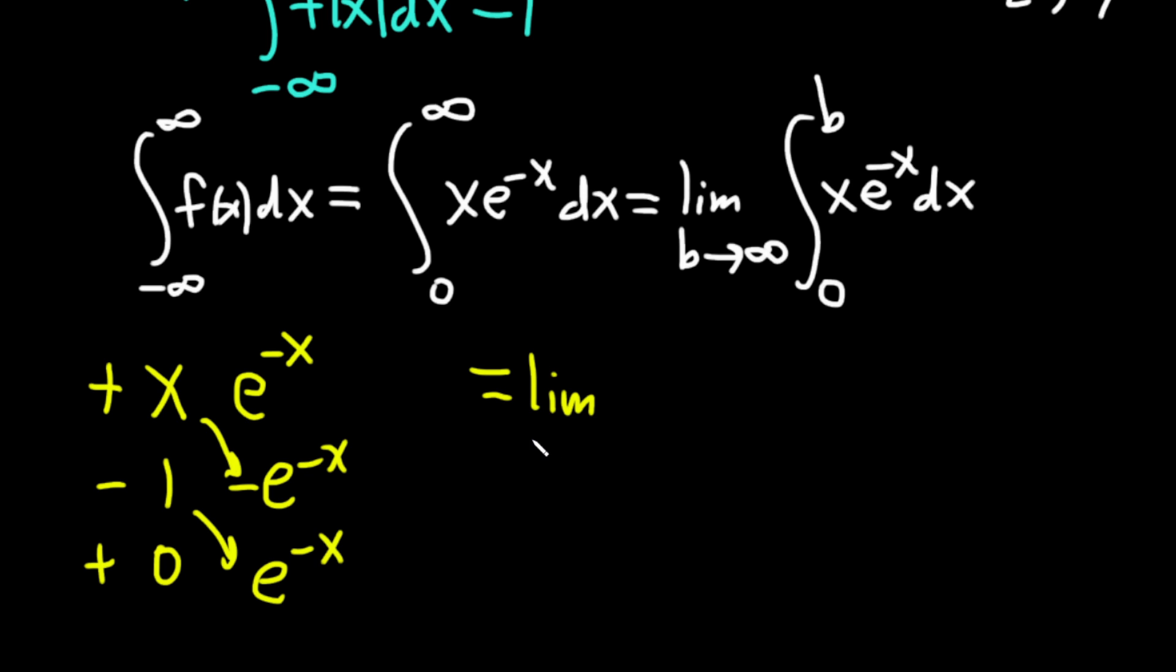So this is the limit as b approaches infinity. Let's follow the arrows. So negative x, e to the negative x, minus e to the negative x. And we're going from zero to b. Let's not forget our limits here. Plug in the b, subtract, plug in the zero. Let's see what happens when we do that.